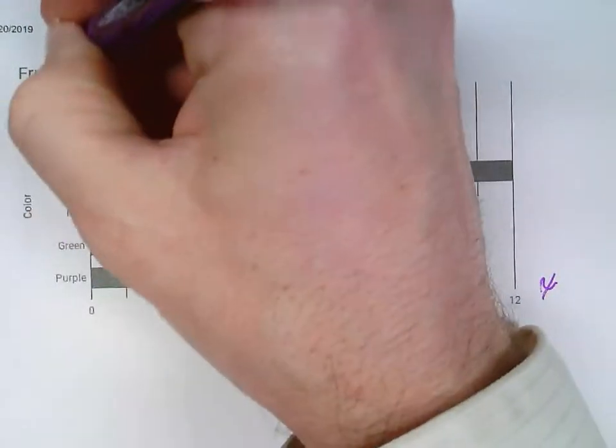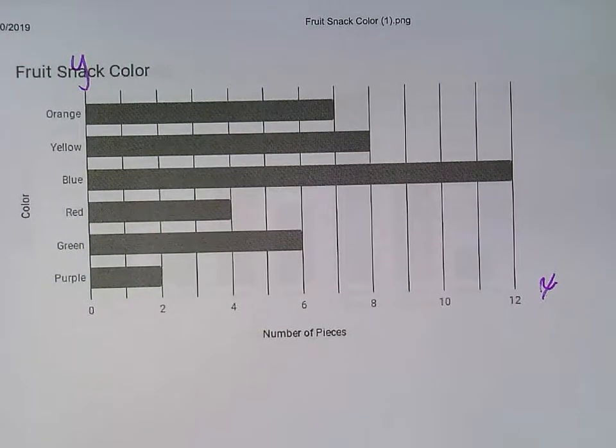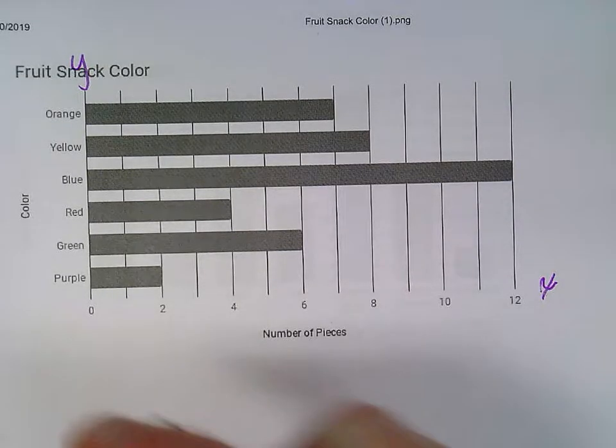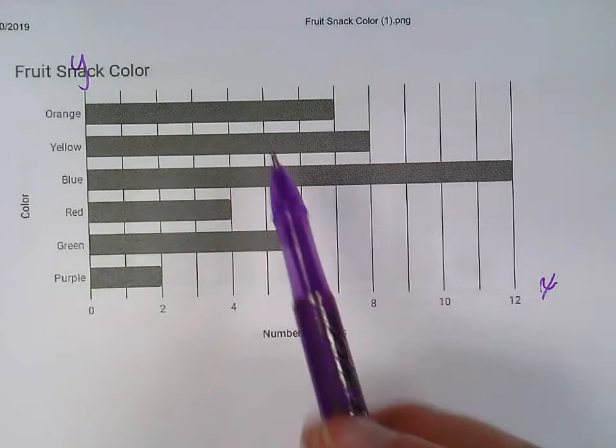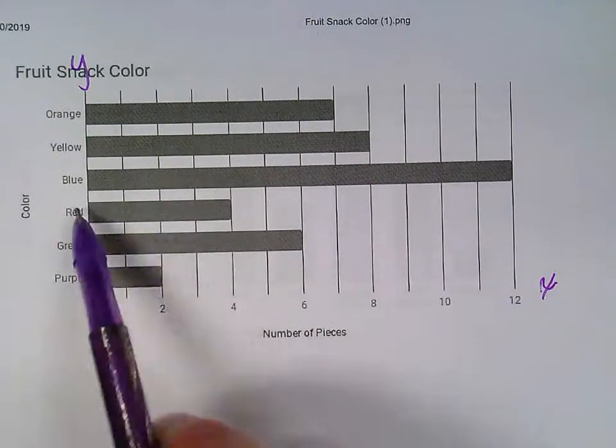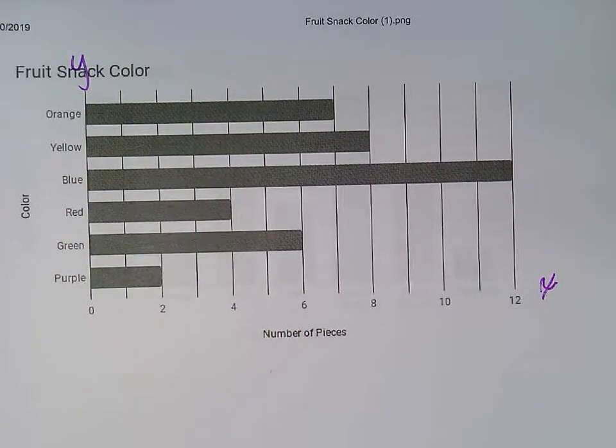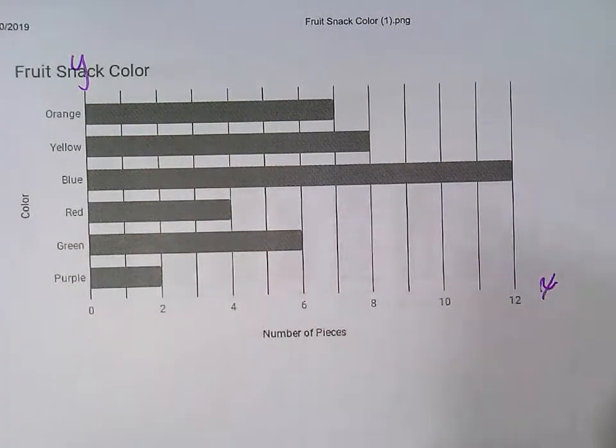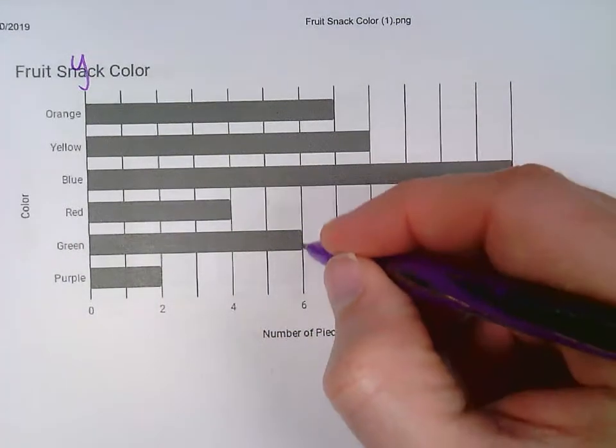So once again, the y-axis and the x-axis stay in the same spot, but just the numbers and the words are flipped, which makes the graph go this way. I still do the same exact thing to figure it out. I still, you know, how many green? I go over to green, and I see that's lined up right with a 6. There's 6 green.